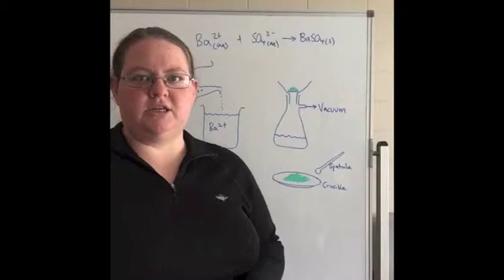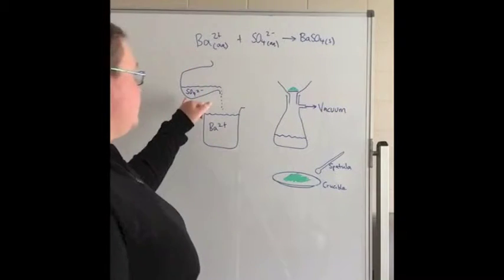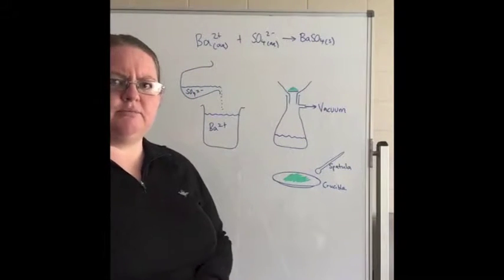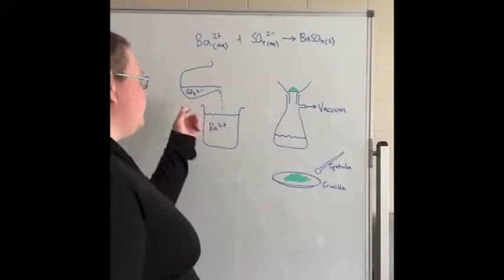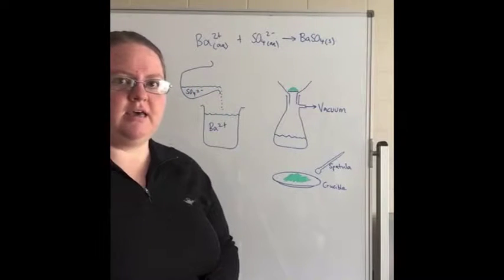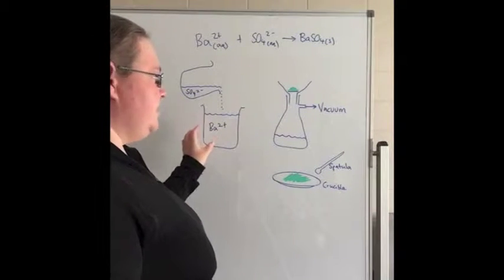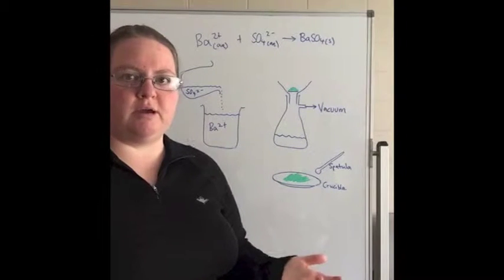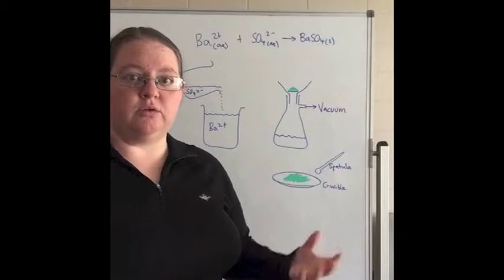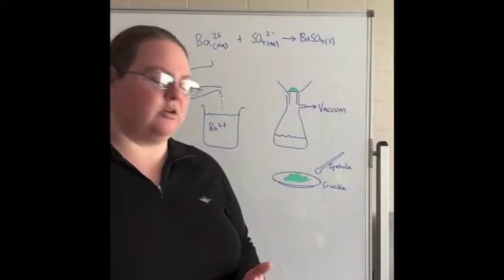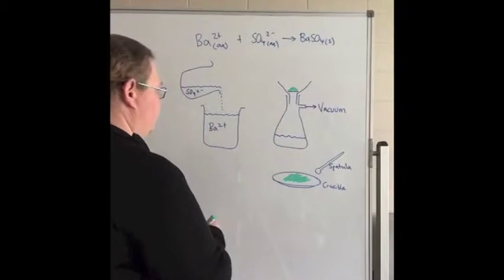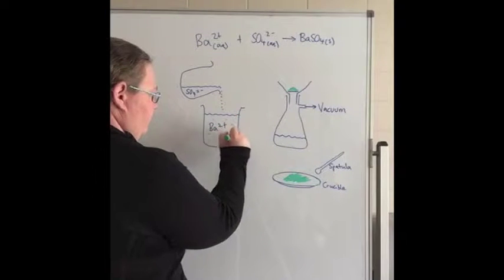The concentration and volume of that sulfate solution doesn't matter too much, as long as you've got excess sulfate. When you've got excess sulfate, you're making sure that all of your barium has reacted and it's all turned into a precipitate. So your reaction is happening here and we're forming our precipitate.